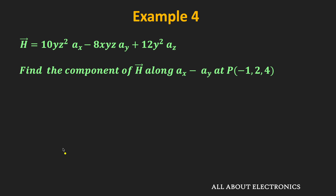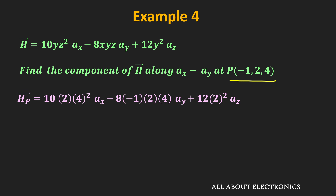In the last example, we have a vector field. We are asked to find the component of vector H along Ax - Ay at point P(-1, 2, 4). Substituting x = -1, y = 2, z = 4 into the vector field equation gives: Hp = 10(2)(4²)Ax - 8(-1)(2)(4)Ay + 12(2²)Az = 320Ax + 64Ay + 48Az.